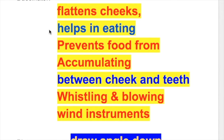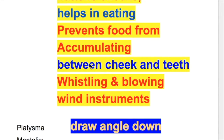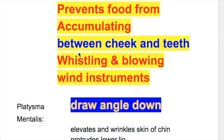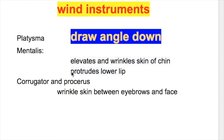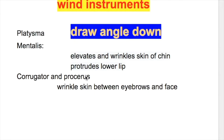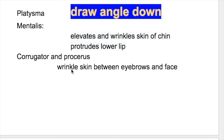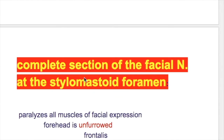Buccinator flattens the cheek and helps in eating. An important clinical point is that it prevents food from accumulating between cheek and teeth — this is exactly what happens in facial palsy, where food accumulates between cheek and teeth. Platysma draws the angle of the mouth down. Mentalis elevates and wrinkles the skin of the chin and protrudes the lower lip. Corrugator and procerus wrinkle the skin between the eyebrows and face.